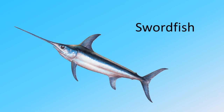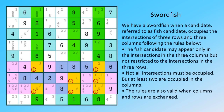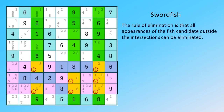First up is Swordfish. We have a swordfish when a candidate, referred to as fish candidate, occupies the intersections of three rows and three columns. The fish candidate may appear only in the intersections in the three columns, but not restricted to the intersections in the three rows. Not all intersections must be occupied, but at least two are occupied in the columns. The rules are also valid when columns and rows are exchanged. The rule of elimination is that all appearances of the fish candidate outside the intersections can be eliminated.